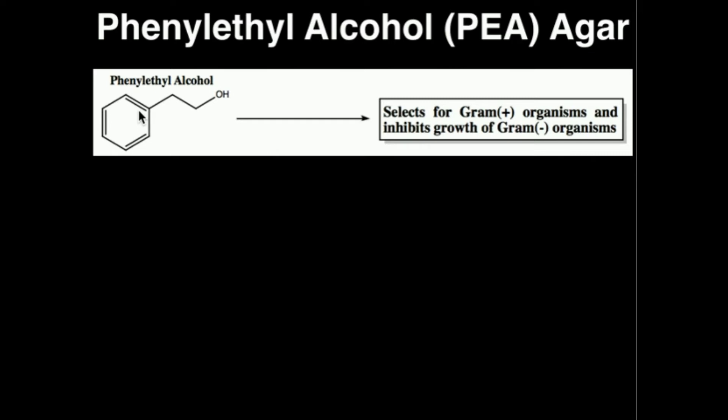PEA agar will not kill gram-negative organisms — it just prevents their growth. So if you had a gram-negative organism, since this agar does not kill them, you're actually able to transfer them to a non-selective agar and continue growing them. You can transfer them to another agar that allows general growth, like a tryptic soy agar, and facilitate further growth of gram-negative bacteria. The key is, if you have significant growth on your agar, you are probably dealing with a gram-positive bacteria.